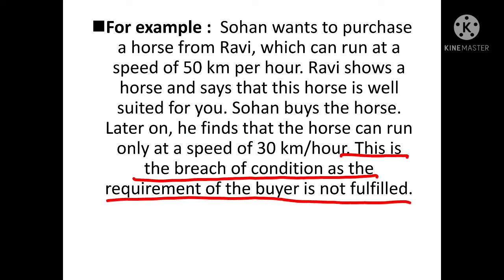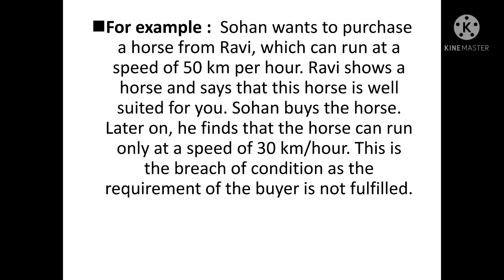This is the breach of condition। Ravi ने condition breach कर दी। Sohan ने clearly Ravi को बताया था कि उसको ऐसा horse चाहिए जो 50 km per hour पर दौड़ सके - यानी Sohan की condition थी 50 km per hour की speed। ऐसे case में Sohan अपने damages claim कर सकता है, पूरा पैसा वापस ले सकता है, और अगर पैसा नहीं दिया तो contract reject कर सकता है।